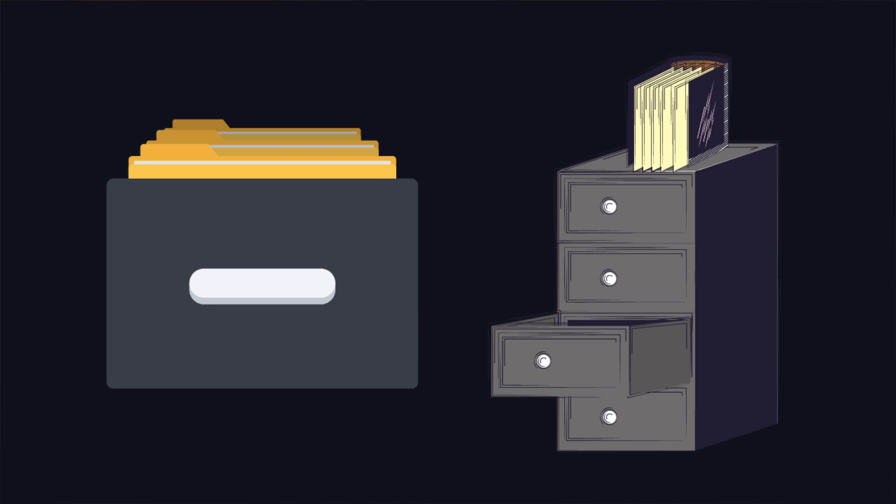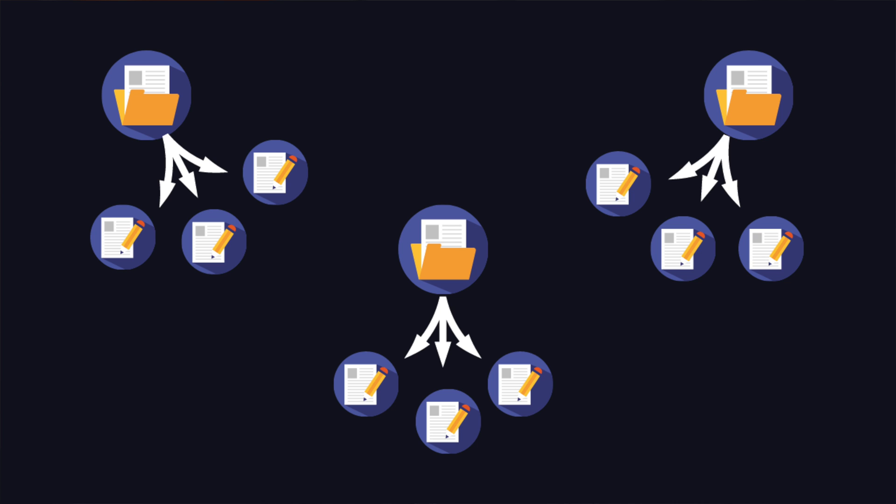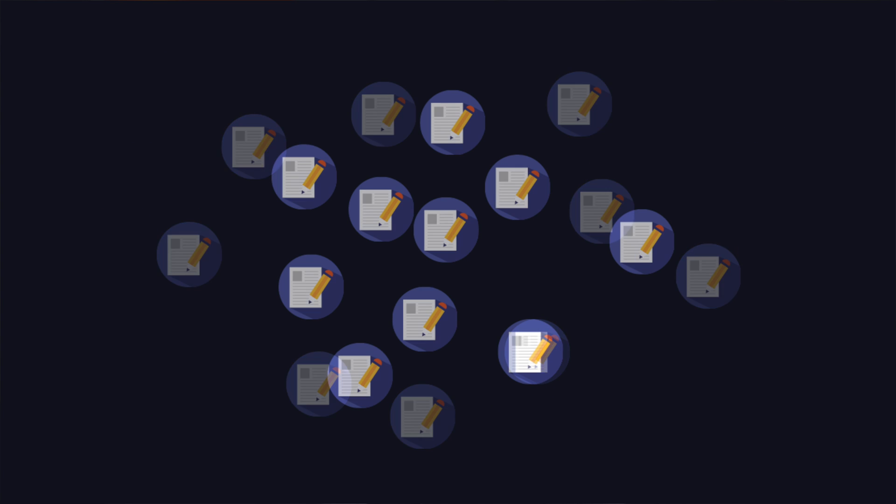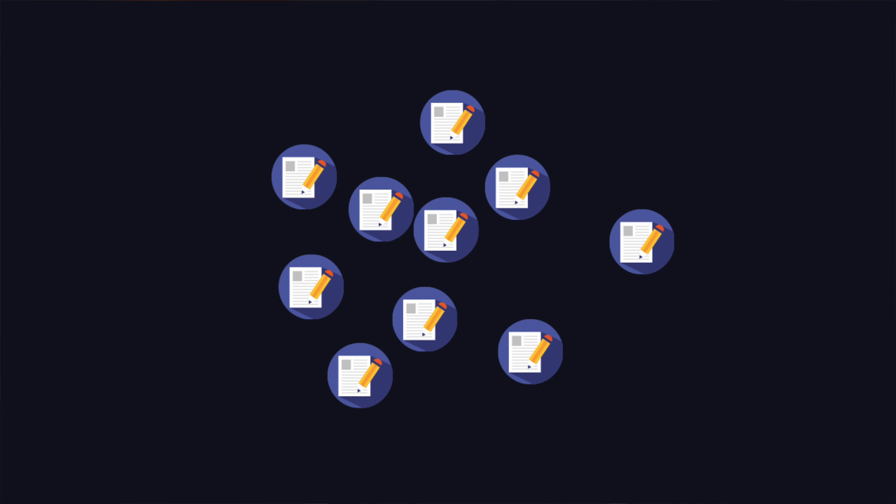Your brain doesn't work with folders and filing cabinets. Your brain just has ideas and starts making connections with things that feel familiar. Smart notes removes the constraints of folders and hierarchy and actually allows all of your notes and ideas to interlink.